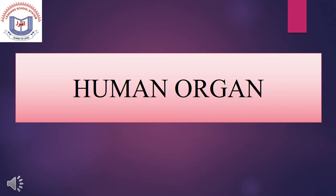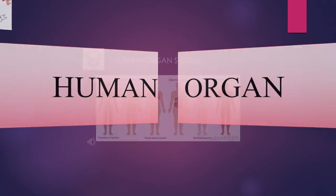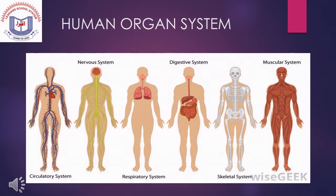About Human Organs: In humans there are 11 major organ systems, but the 6 main organ systems are the circulatory system, nervous system, respiratory system, digestive system, skeletal system, and muscular system.